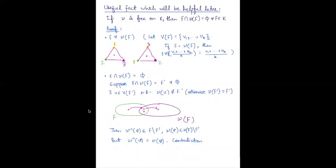Before moving on to more examples, we'll note a small fact: if K is a simplicial Z2 complex and ν the Z2 action is free on K, then for all simplices F in K, F and ν(F) do not intersect. First we show F is not equal to ν(F): if F were equal to ν(F), then ν would be permuting the vertices of F, meaning the barycenter of F would be mapped to itself, contradicting ν being free. So F is not equal to ν(F).